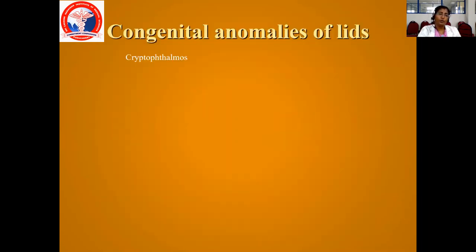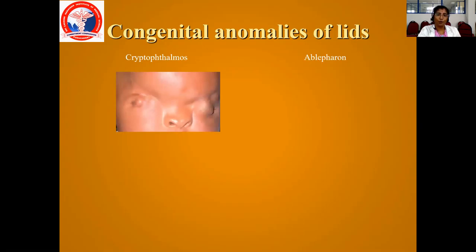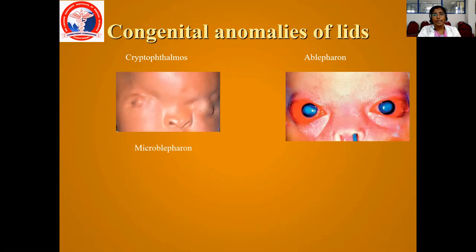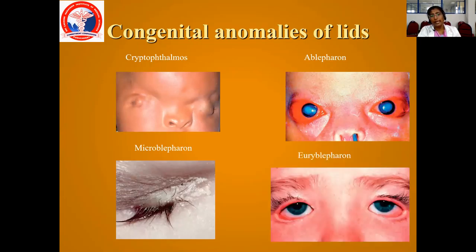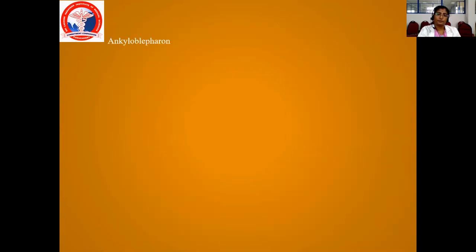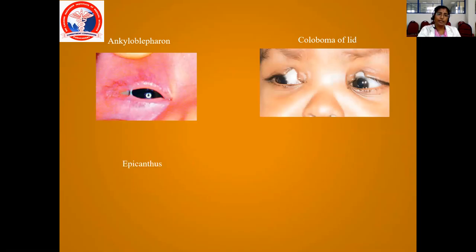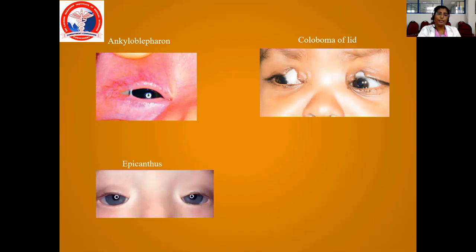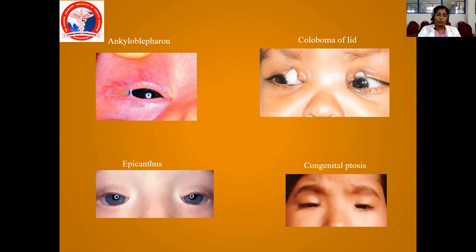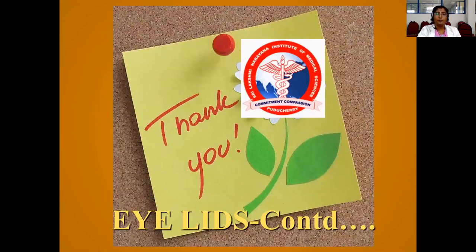Coming to congenital anomalies. You have cryptophthalmos — where there are no formed eyelids at all. Ablepharon — you don't have lids, they are open. Microblepharon — the lid is very small in size. And euroblepharon — which has increased palpebral fissure. Ankyloblepharon is the adhesion between upper lid and lower lid. Coloboma is a defect in the upper lid or lower lid. Epicanthus — a fold of tissue medially. And one more is congenital ptosis, where the upper lid comes down. We will see other diseases of the eyelids in the next class.